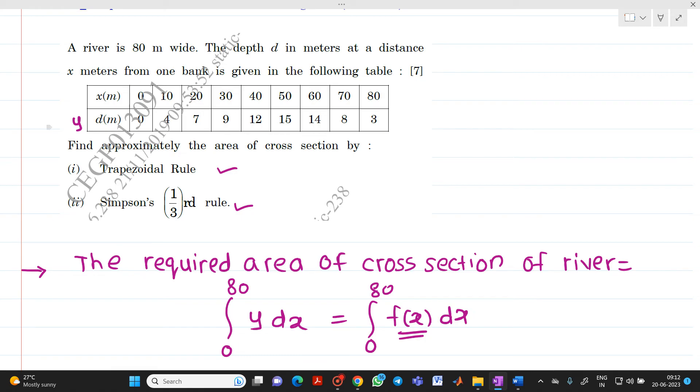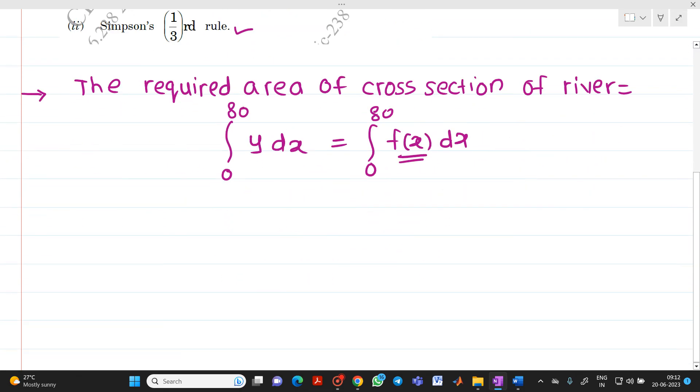If you see, it will start from x0, x1, x2, x3, x4, x5, x6, x7, x8, with corresponding values y0, y1, y2, y3, y4, y5, y6, y7, and y8. So what is here? Number of intervals n will be equal to 8.